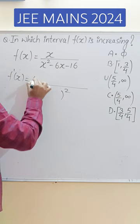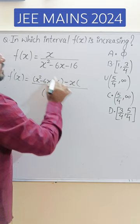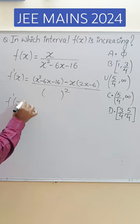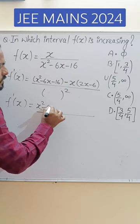Minus x times the denominator derivative 2x minus 6. So what is f'(x)? What is the denominator? The denominator squared will always be a positive quantity. We will solve the numerator: x squared minus 6x minus 16.